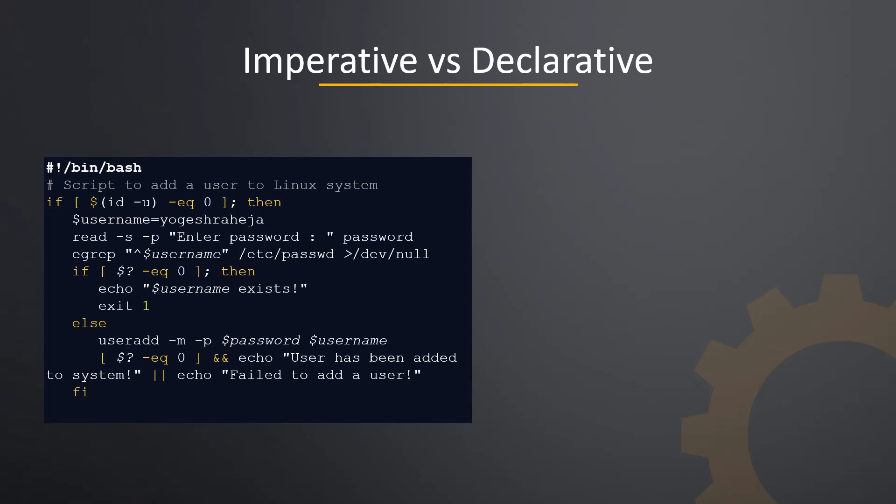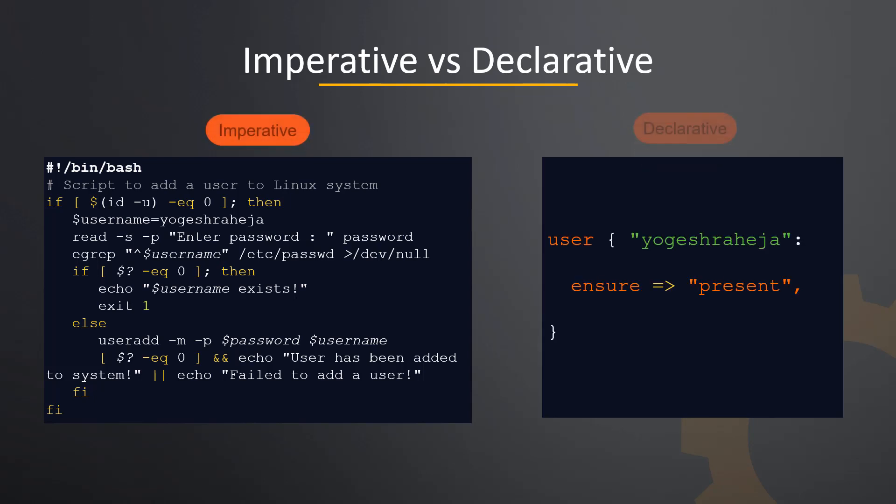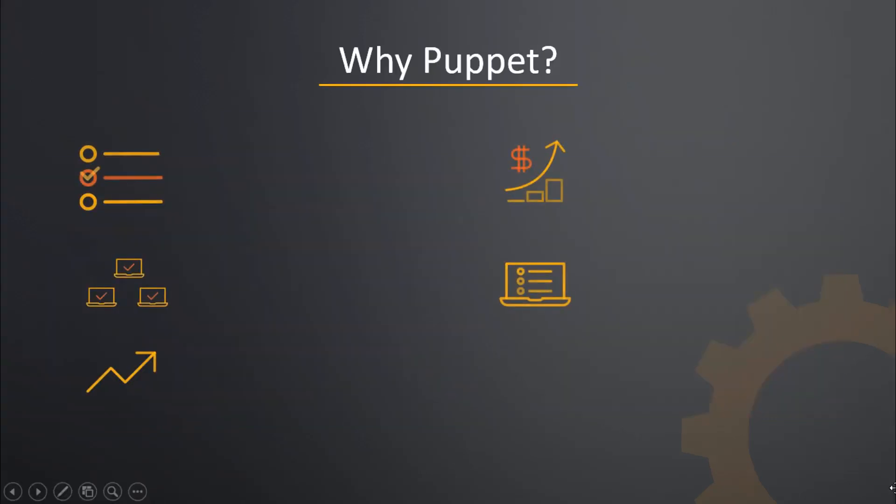Here is a simple shell script that is used to create a user on the system. Here we specify how to create the user, what commands to use on the operating system, etc., so this is imperative programming pattern. However, on the right is a more declarative approach where we achieve the same results with only a few lines of Puppet code, which is an example of declarative programming pattern. Thus, Puppet uses declarative programming approach using Puppet DSL, which is domain-specific language.